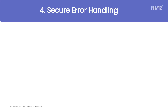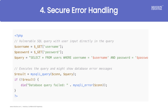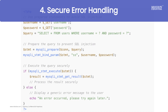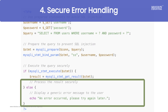Finally, secure your error handling. Detailed database error messages can give attackers valuable insights into your system's structure. Instead, use generic error messages for users while logging the full details internally for review. This keeps critical information safe.